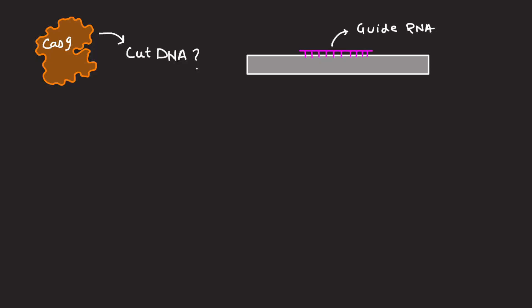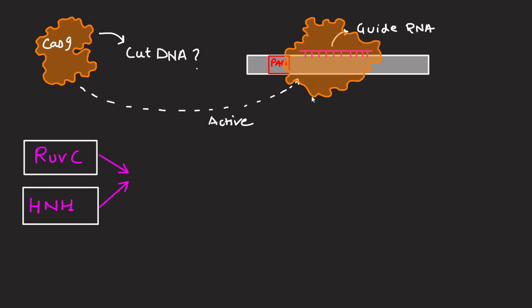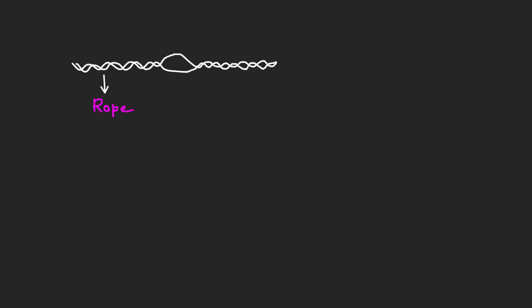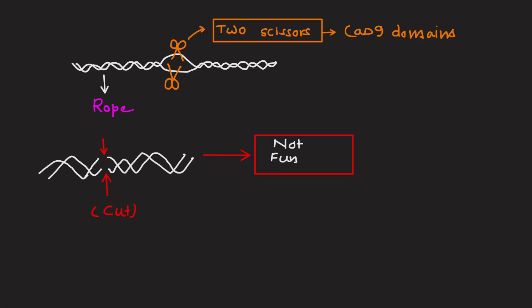How does Cas9 cut the DNA? Once the guide RNA matches the target DNA and PAM is present, Cas9 becomes active. It uses two cutting domains called RuvC and HNH to make a double strand break. It cuts both strands of DNA at the exact location. This is like cutting a rope in two with scissors. Once the viral DNA is cut, the virus can no longer function. It's as good as dead. That means the bacteria has successfully defended itself.